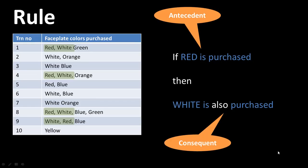One thing we have to be clear about when we say that something is a rule, is that it's not a 100% scenario where the rule is always applicable. So for example, here, although in four of the 10 cases, whenever red occurs, white also occurs — so that's a rule.